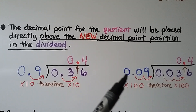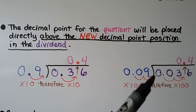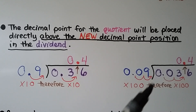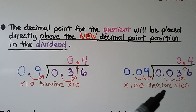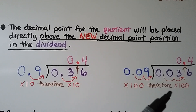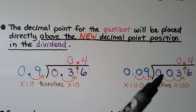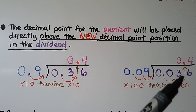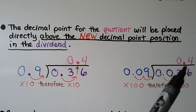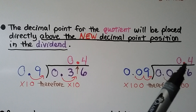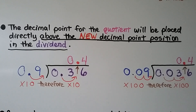We have 36 hundredths divided by 9 tenths. It only needs one hop to become a whole number, so that's times 10. The dividend is multiplied times 10, moving the decimal point one hop to in between the 3 and the 6. For the quotient, it goes directly above this new position. For 9 hundredths as divisor, it needs two hops to the right, so we multiply by 100. That moves the dividend's decimal two hops to in between the 3 and the 6, and the quotient's decimal point goes directly above.